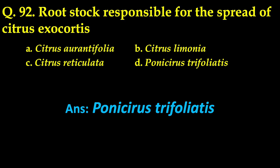The next question: rootstock responsible for the spread of Citrus exocortis — the correct answer is Poncirus trifoliatus. Its common name is trifoliate orange, and it is an indicator plant for Citrus exocortis. The rootstock of trifoliate orange is generally used in grafting and that helps in the spreading of the disease caused by viroids.